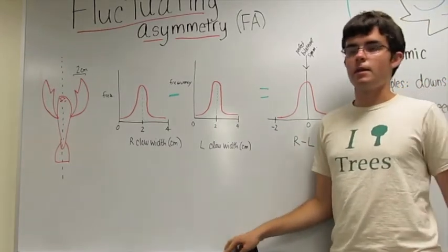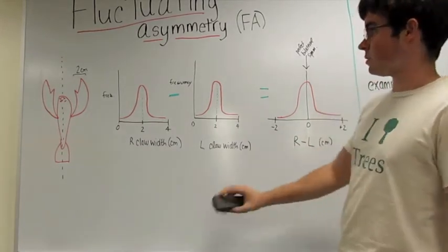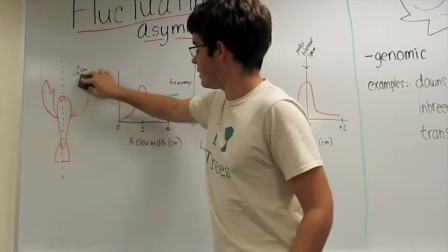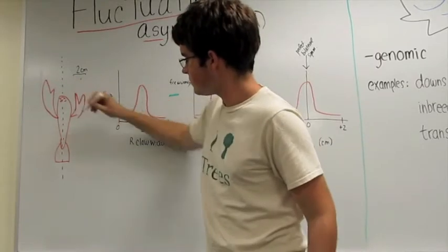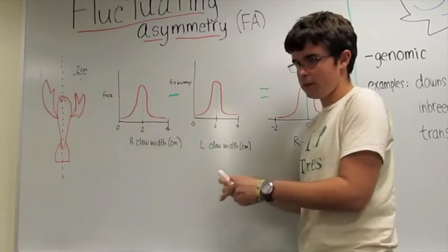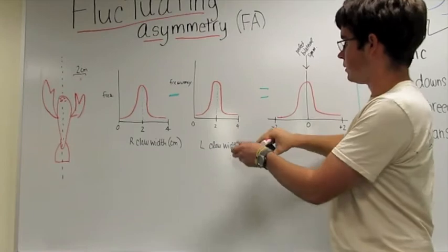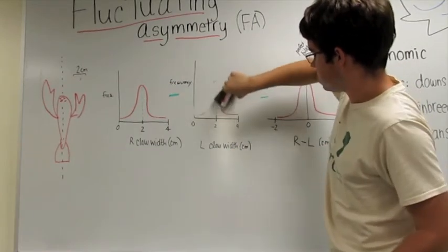For fluctuating asymmetry, say Larry and his friends experience some kind of stress when they are developing. One claw might become a little smaller. That would shift one of these curves a little bit to the left.